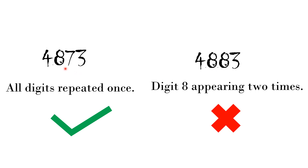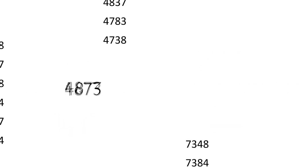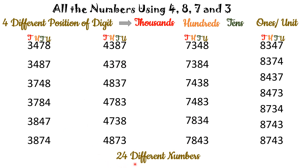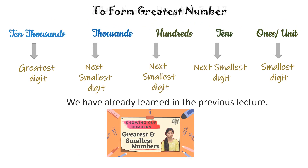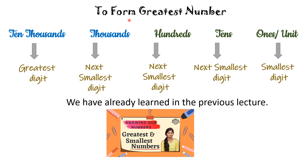Make as many four-digit numbers as you can. और हमें पता चलेगा कि हम total 24 numbers form कर सकते हैं, जैसा कि यहां दिखाया गया है. और हमने पहले ही greatest and smallest number find out करना सीखा है. Please do watch our previous video on finding greatest and smallest number for more details. आपको नीचे description में link मिल जाएगा.